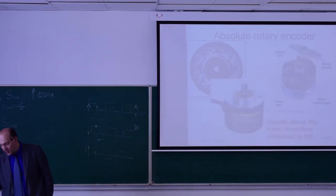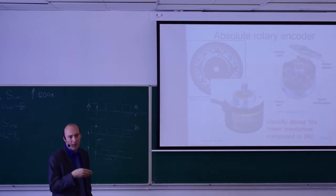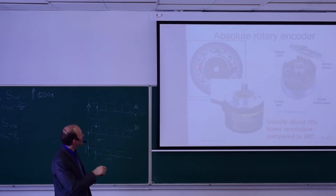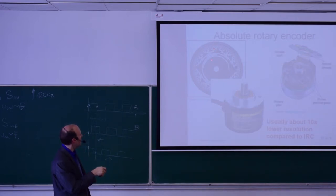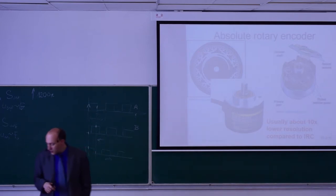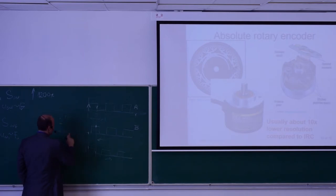A real encoder code wheel is much more complex — for example a 10 to 12-bit encoder has an intricate pattern made in grey code, with only one bit changing at any given time. Counting the tracks: 1, 2, 3, 4, 5, 7, 8, 9, 10, 11, 12 roughly — so this encoder encodes 2 to the power of 12, which is 4,096 positions. That is the resolution of this kind of encoder.